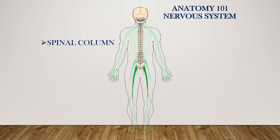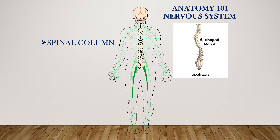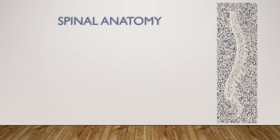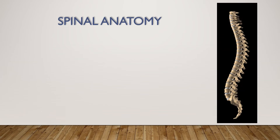When looking at the spine from the back view, the spine should be nice and straight. Any lateral or S curves in the spine are called scoliosis. On the side view of the spine, we can see some curvatures, and we will talk more specifically about these curvatures later on in the presentation.